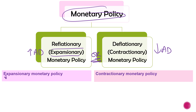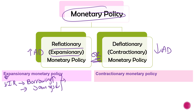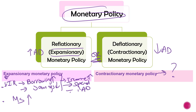When the government wants to increase aggregate demand, they need to decrease the interest rate in order to increase borrowing and decrease savings. In both cases, income will increase, therefore we will have more money to spend, and this leads to an increase in aggregate demand. Another way is for the government to touch on money supply — they need to increase the money supply to increase aggregate demand.